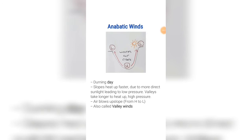Anabatic winds. These winds occur during the day. During the day the slopes heat up faster due to more direct sunlight on them, so a low pressure is formed on the slopes. The valleys take longer to heat up, therefore there is high pressure down in the valley. Remember, air blows from high to low, so the air blows up the slope from the high pressure to the low pressure. These winds are also called valley winds.